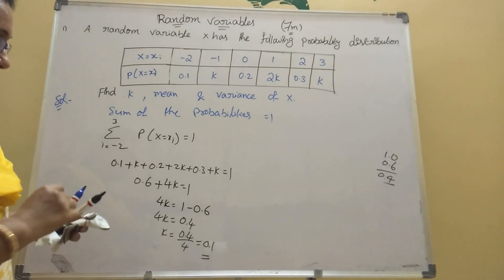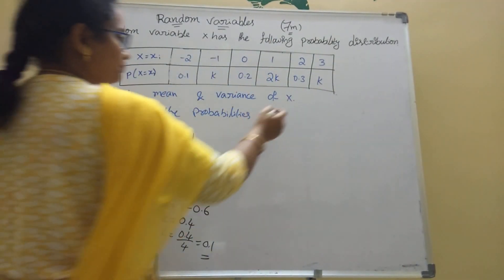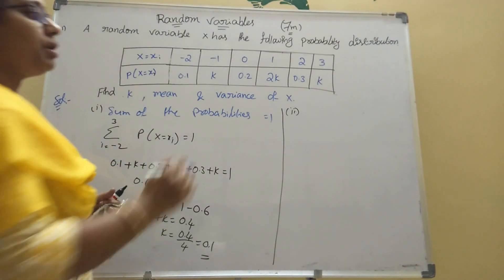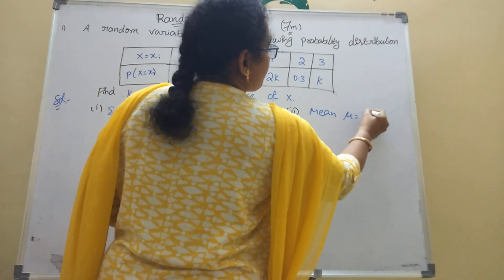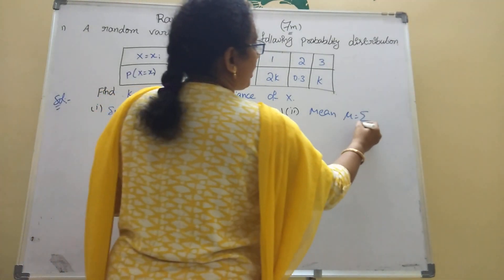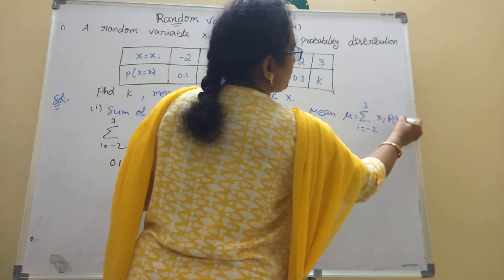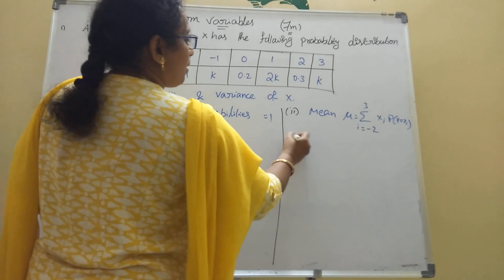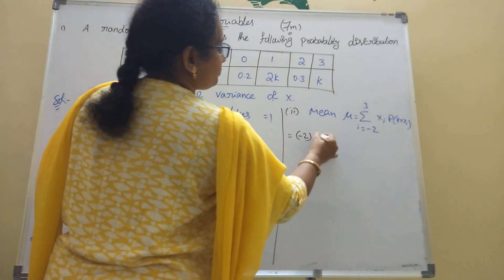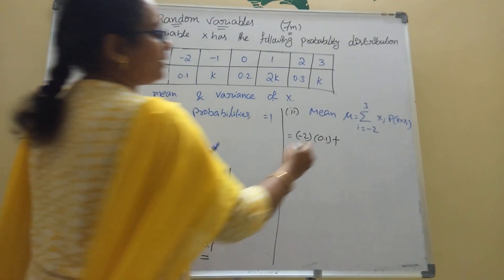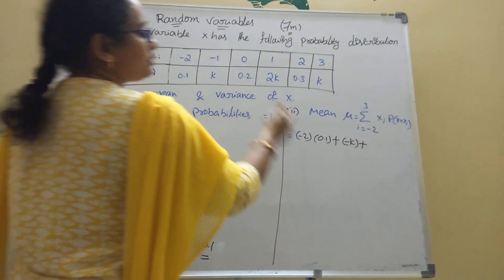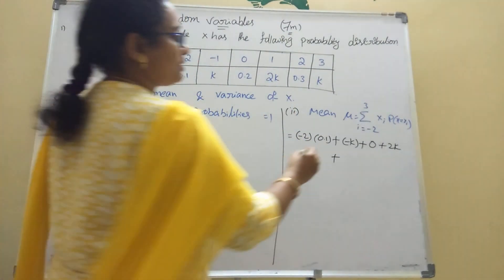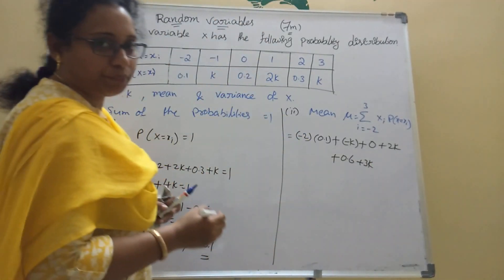For the mean, the formula is mu equals sigma from minus 2 to 3 of xi into p(x equal to xi). Multiplying each x by its probability: minus 2 into 0.1, plus minus 1 into k, plus 0 into something (which is zero), plus 1 into 2k, plus 2 into 0.3, plus 3 into k.